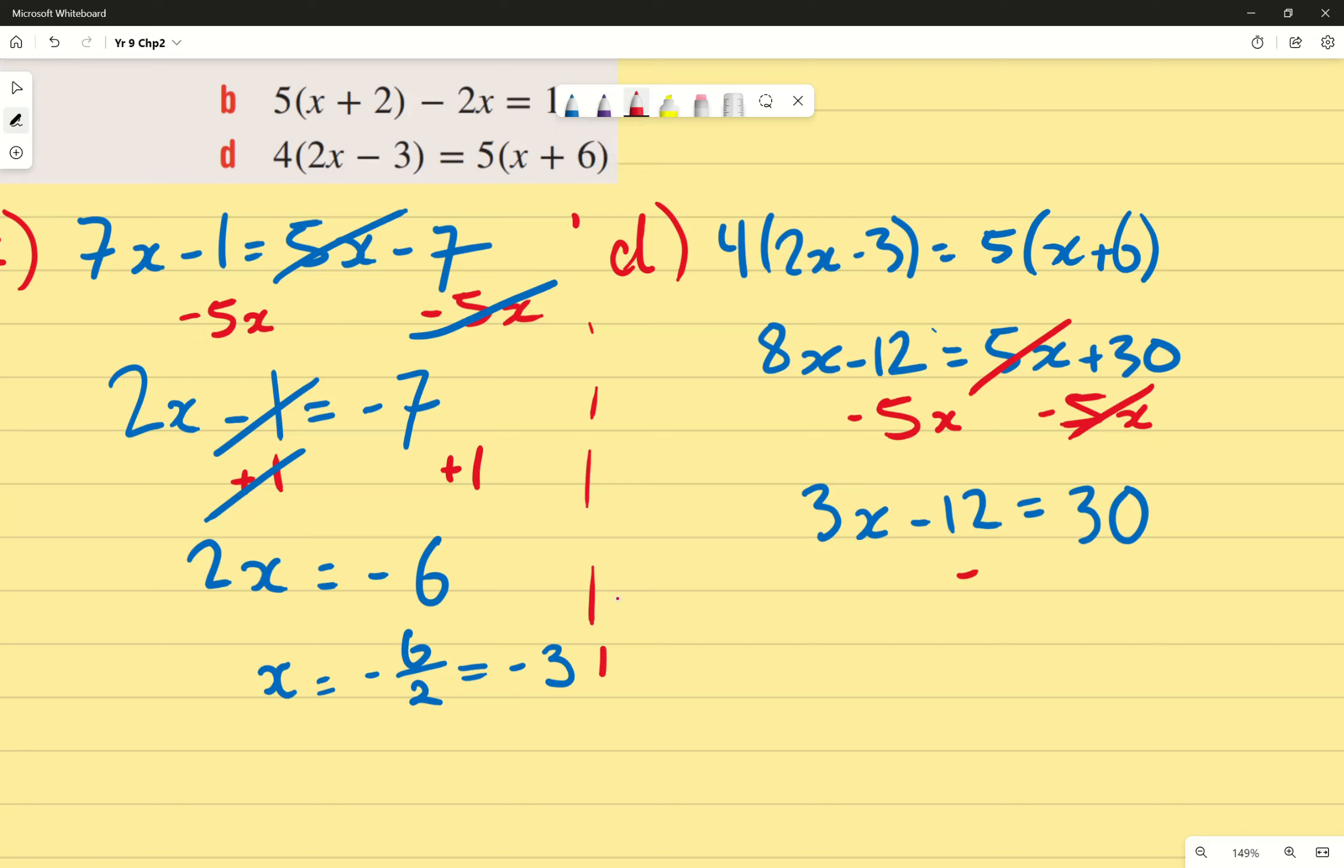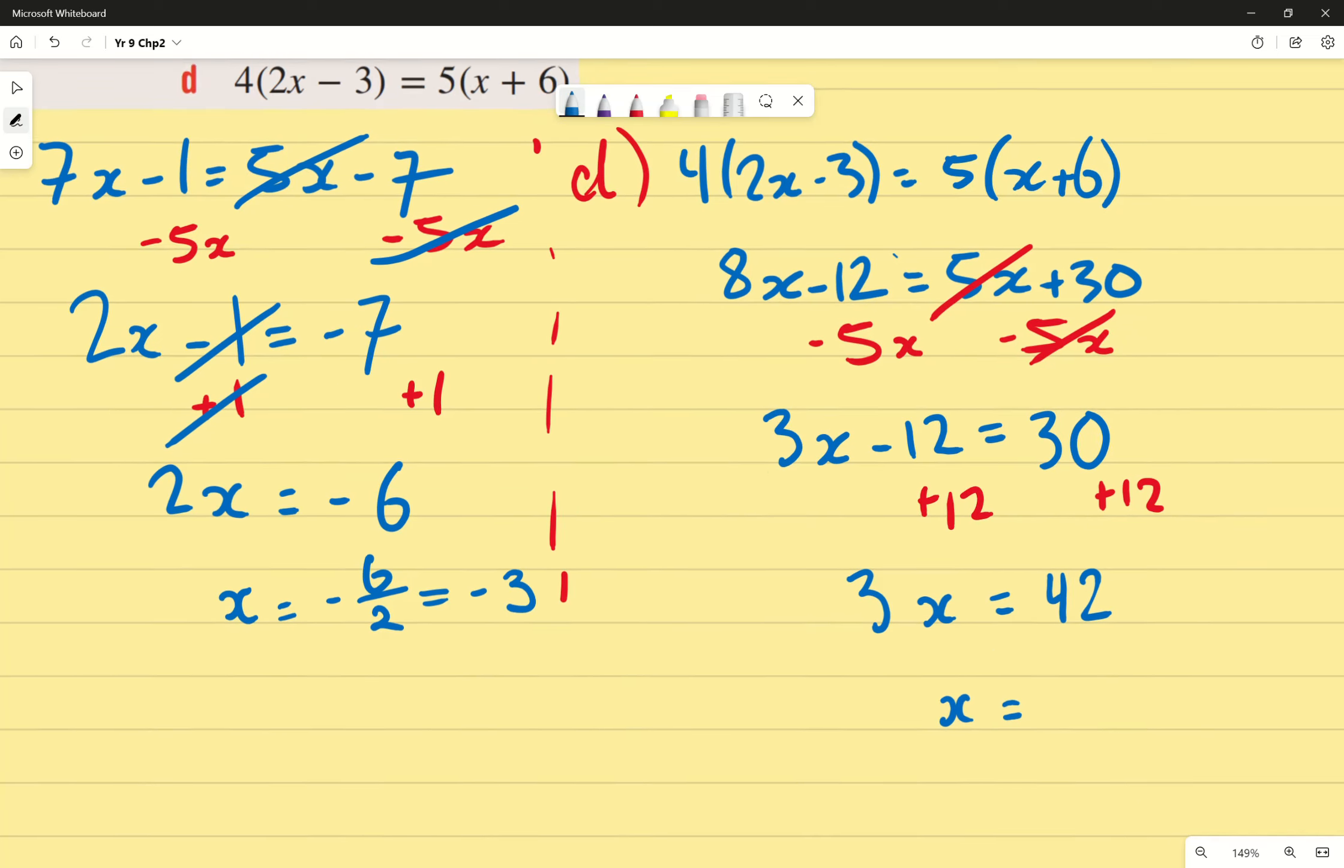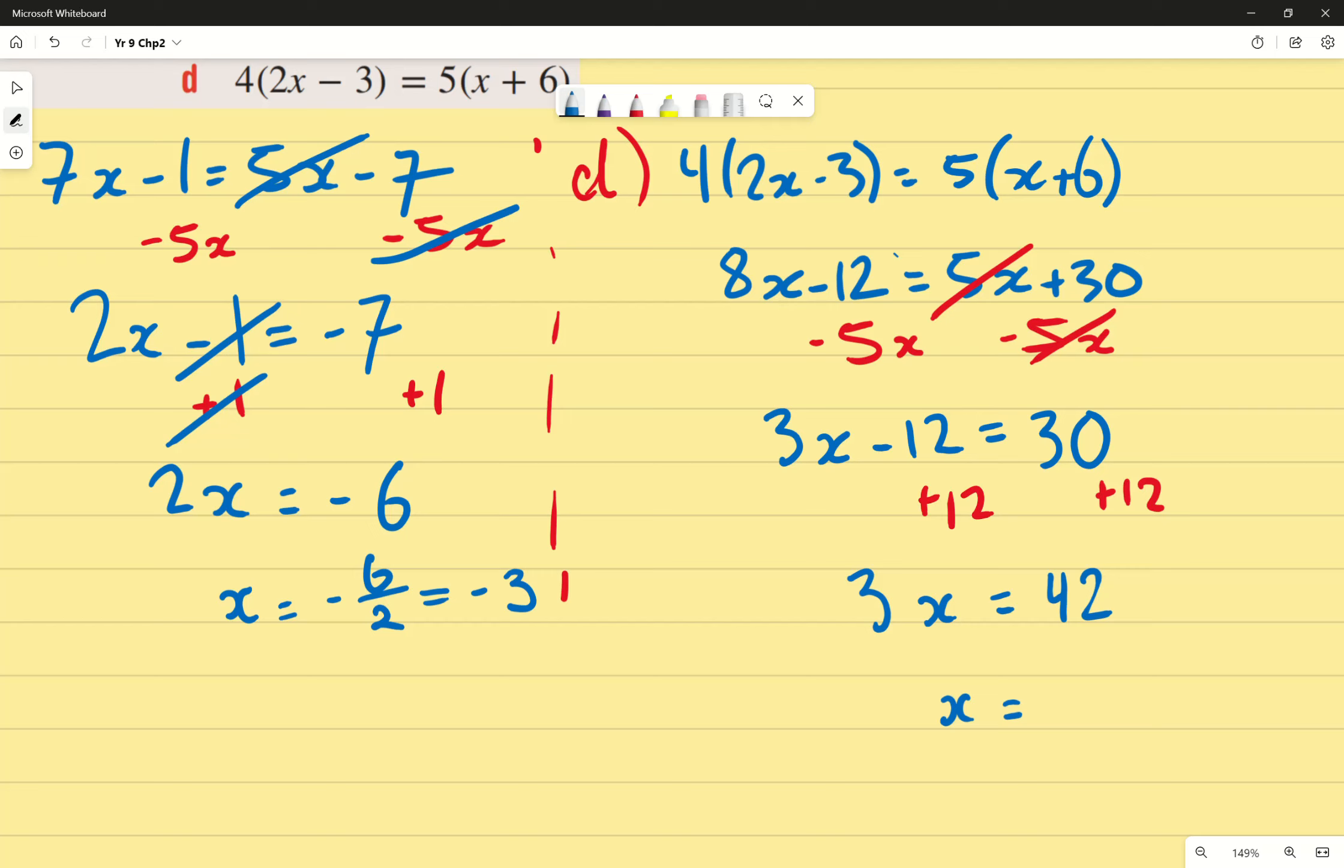So we end up with plus 12 on both sides. And we get 3x equals to 42. And of course, as we already know, to do the opposite of times 3, we divide it by 3. It becomes 42 over 3. That's a trickier one. Are we done? Why not?